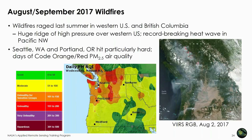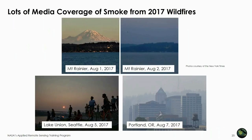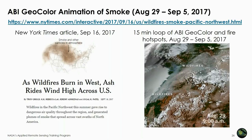There was significant media coverage of this event. New York Times photos show Mount Rainier with a clear view on August 1st, then completely obscured by thick smoke on August 2nd, and smoke lingering over Seattle and moving down to Portland later that week. The atmosphere was obscured by thick smoke from the wildfires throughout the Pacific Northwest.